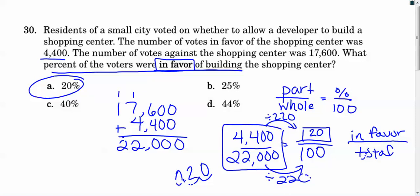So this definitely was a few part question. First of all, you needed to know that concept of part over whole equals percent out of 100, and you needed to find the part that were in favor. So if you look at those numbers, there's definitely less people that wanted this thing, the shopping center to be built than people who were against it. Many people were against it, right? So our percentage should be pretty low.